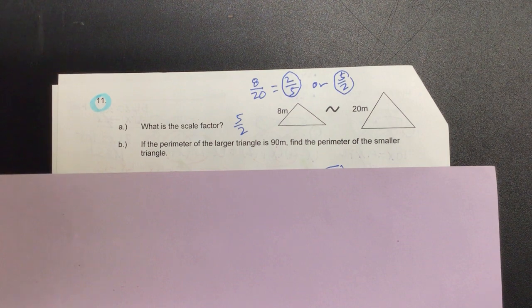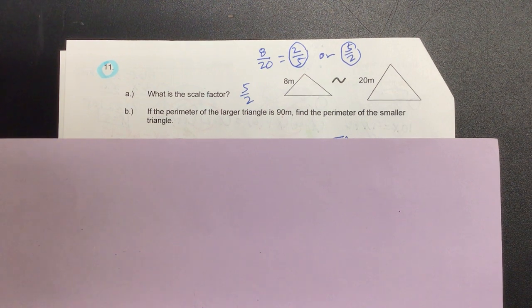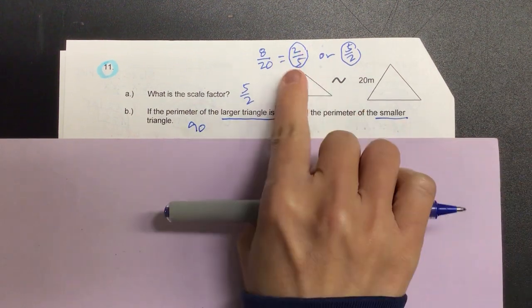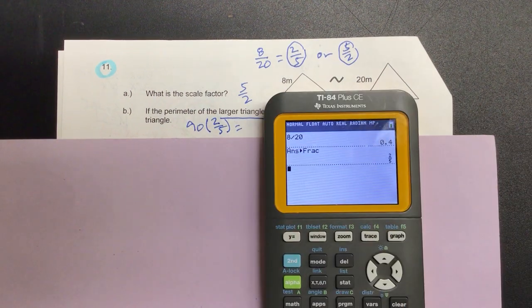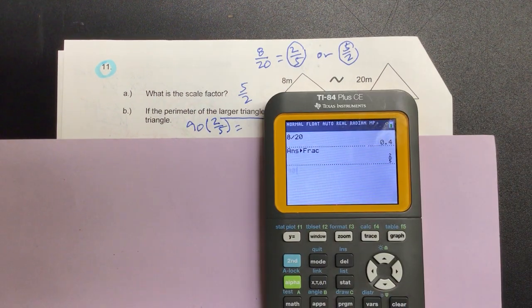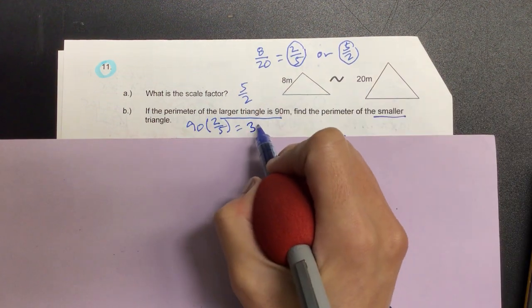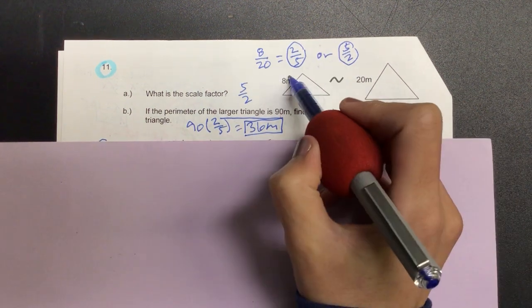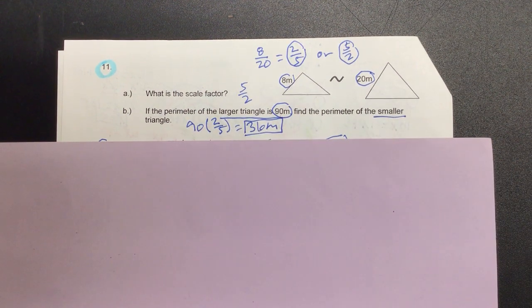Okay, part B. Let's read. If the perimeter of the larger triangle is 90 meters, find the perimeter of the smaller triangle. So we're going from large to small. So I'm going to take 90, take my smaller fraction, multiply by that. It's going to give us 90 times 2 fifth. We're anticipating it to be smaller. And is 36 smaller than 90? Yep. Here's what else you can do. If you're like, well, I don't know when to multiply, you can do 8 over 20 is equal to X over 90. It will still work out. Okay?